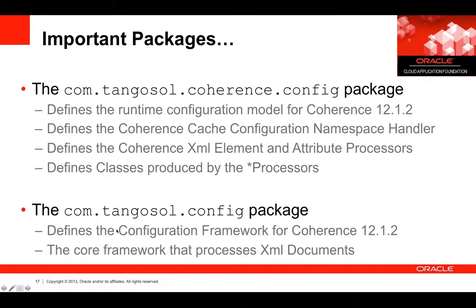There are some important packages new to Coherence 12.1.2. The com.tangosol.coherence.config package defines the entire runtime cache configuration model, the Coherence cache configuration namespace handler, together with all element and attribute processors — all publicly defined, meaning we can take advantage of or override them. The other important package is com.tangosol.config, which defines the configuration framework itself — the core framework Coherence uses to process XML documents. It's not Coherence-specific and can be used for any purpose. Together these two packages allow you to extend Coherence.